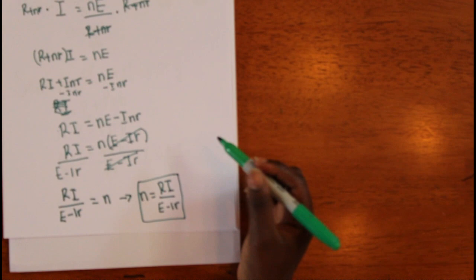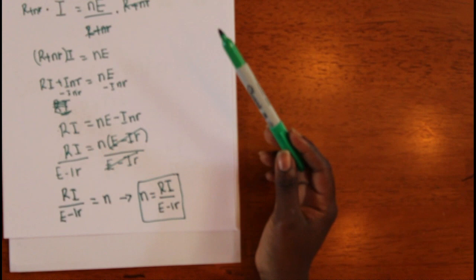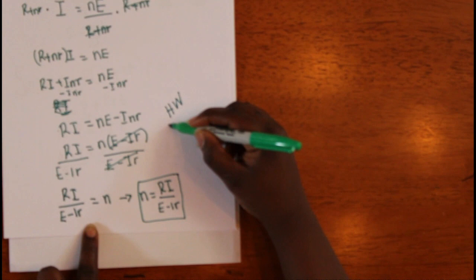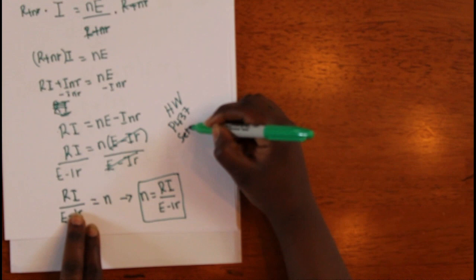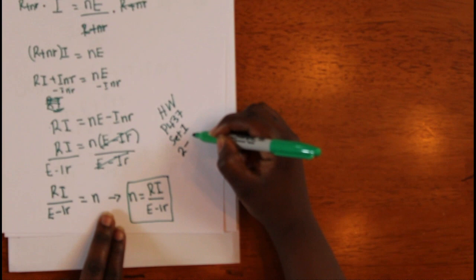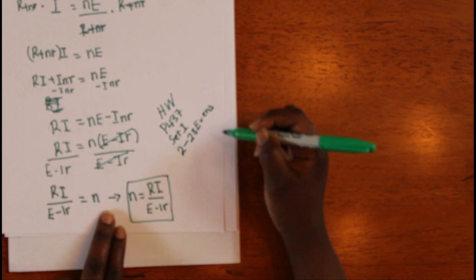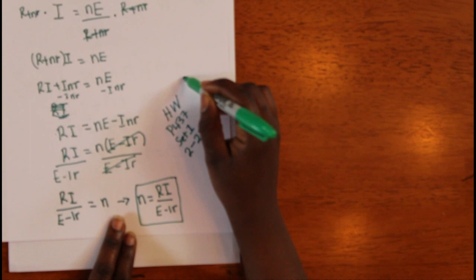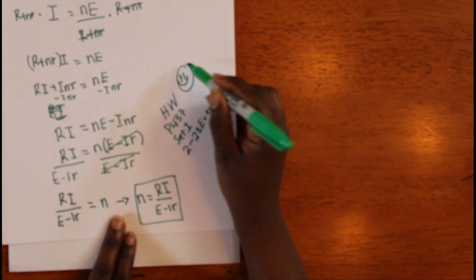Literal equations are equations with one or more variables where you solve for a specific variable. The homework for this section is page 437, set one, questions 2 through 28 evens. I'm still running a fever so that's why I'm not here today — hopefully I'll see you Tuesday for the quiz. Review videos for 8.7 and 8.8 will be provided.